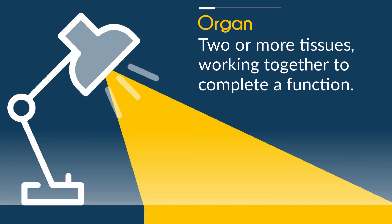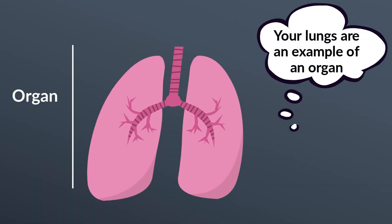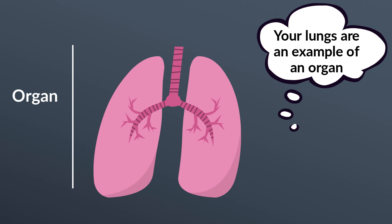Next, an organ. An organ is two or more tissues working together to complete a function. Your lungs are an example of an organ.